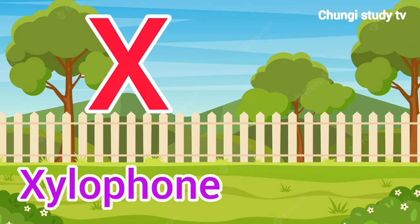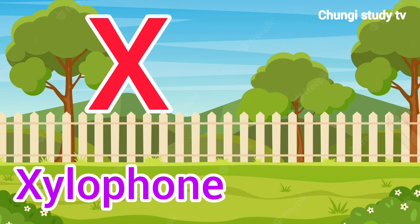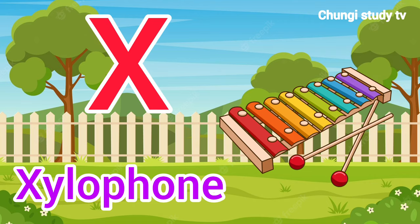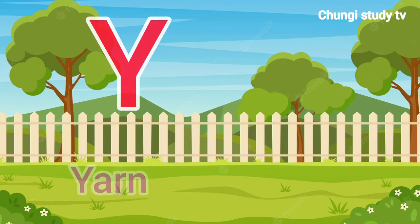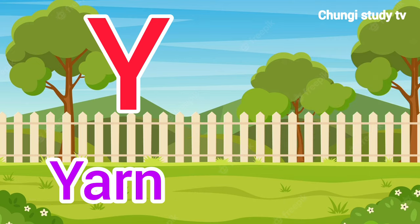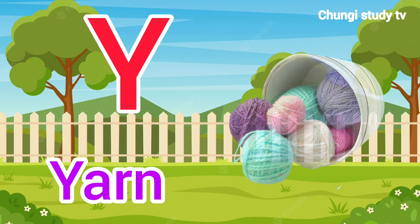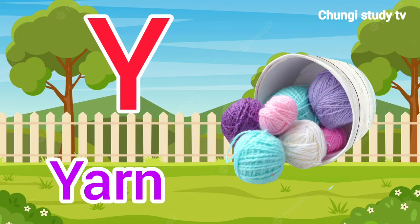X, X for Xylophone. Xylophone means Xylophone. Y, Y for Yarn. Yarn means Dhaga.